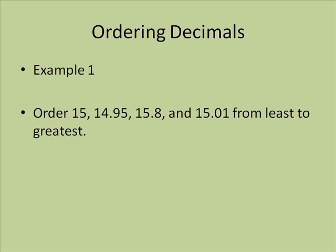The more difficult task would be ordering decimals. This is difficult because now we have around 4 numbers to rank and order instead of 2. In this case, we have to order 15, 14.95, 15.8, and 15.01 from least to greatest.